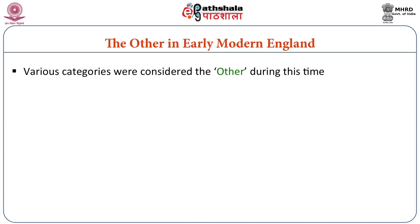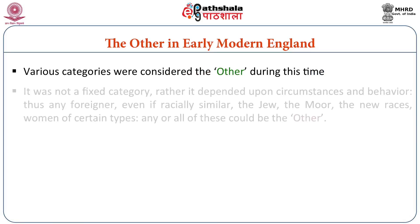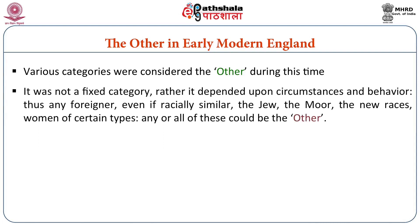The other in early modern England is not a fixed category. The other in any time, in any part of the world, is usually never fixed. At times of stress and tension in a community, anybody could be considered the other — whether of the same race, the same culture, sometimes people of another gender, or people with different eating habits. Anything is possible, so the other is not a fixed category. It depends upon circumstances, the time, and the behavior of any given person.